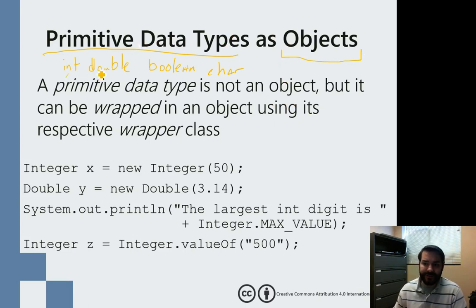We can take this integer or this double or boolean or char and we can actually create what is known as a wrapper class. It's a primitive wrapper class and what this allows me to do is now take this idea of a primitive data type.